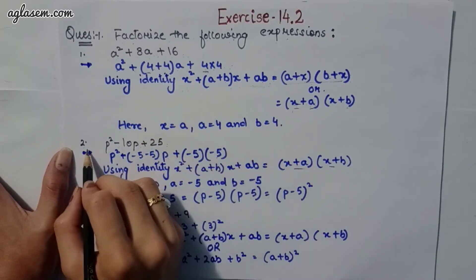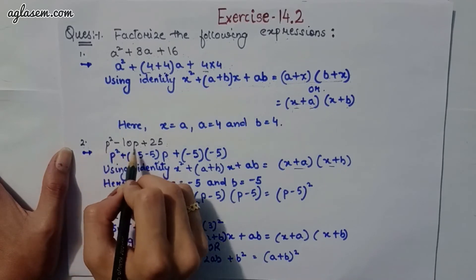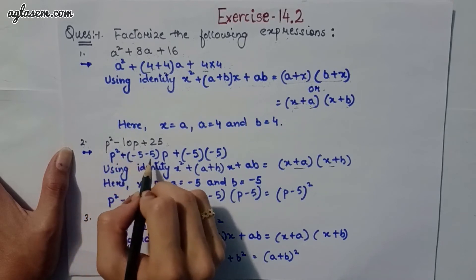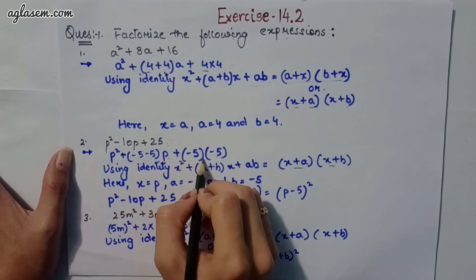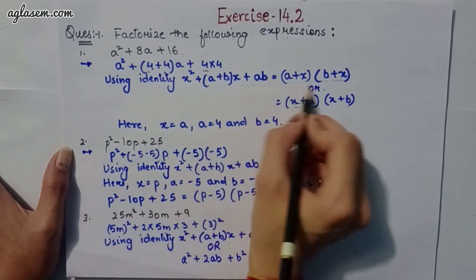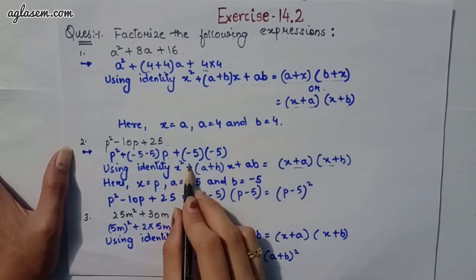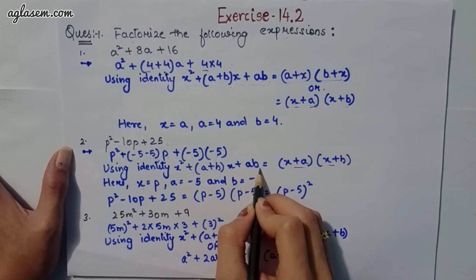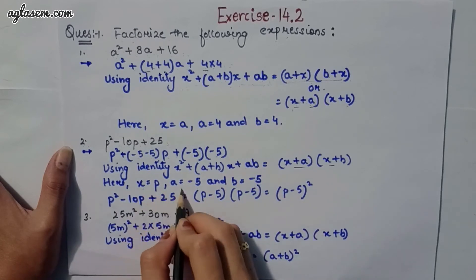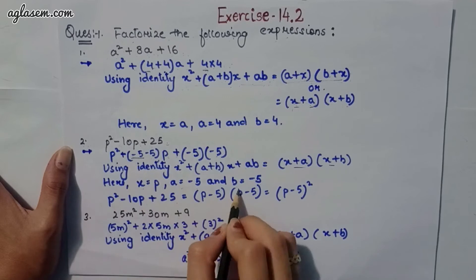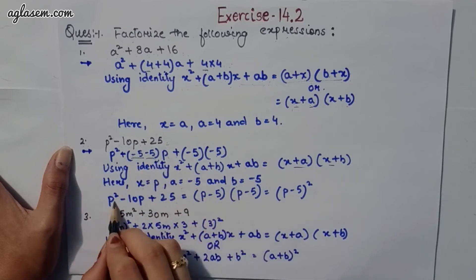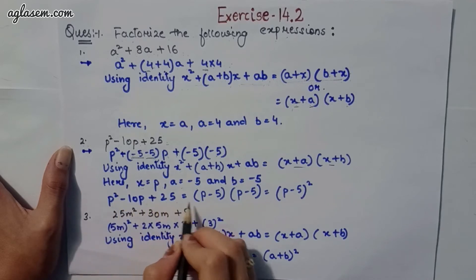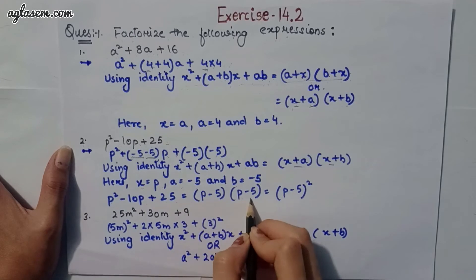Moving to the second part: p² − 10p + 25. Using the same identity x² + (a + b)x + ab, we set x = p, a = −5, b = −5. So p² − 10p + 25 = (p − 5)(p − 5).